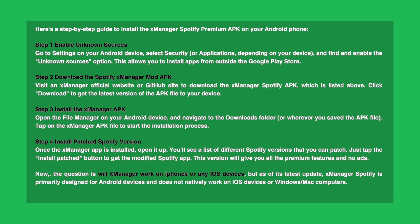Step 2, download the Spotify X-Manager mod APK. Visit the X-Manager official website or GitHub site to download the X-Manager Spotify APK, which is listed above. Click Download to get the latest version of the APK file to your device.